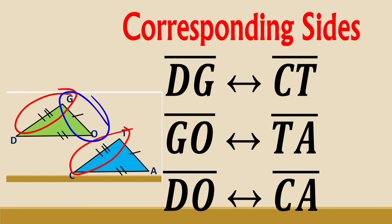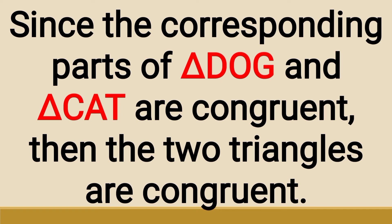For the corresponding sides: side TA and side DO correspond to each other, and side CA corresponds to the matching side. These are the corresponding sides. Take note of the different corresponding parts: corresponding vertices, corresponding angles, and corresponding sides.